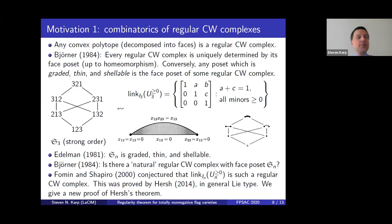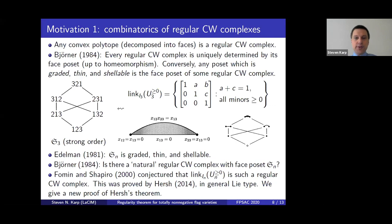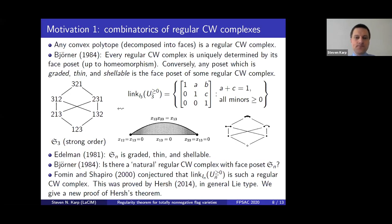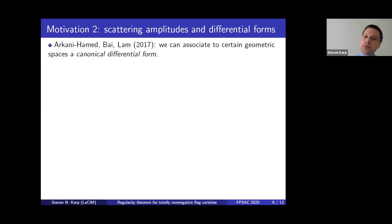Fomin and Shapiro outlined a strategy for proving their conjecture which didn't quite succeed, and Hersh gave a completely different argument. We give a new proof of Hersh's theorem, completing the argument of Fomin and Shapiro and generalizing it to the Grassmannian. That's the historical motivation which ultimately led Postnikov to make his conjecture.